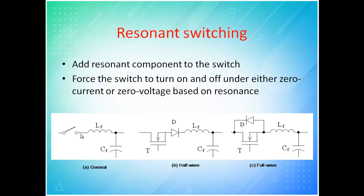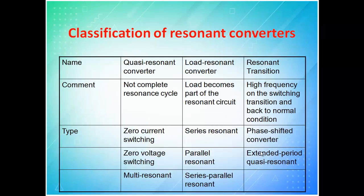Based on resonance, it may be zero current resonance or zero voltage resonance. There is also half wave and full wave: in half wave, the switch and diode are in the same direction of conduction, so only one direction is possible. In full wave, an anti-parallel diode is connected, allowing both directions, so we call it full wave resonance. Quasi resonance means it is not a complete resonance cycle — resonance occurs for only part of the cycle, which is why we call it quasi.